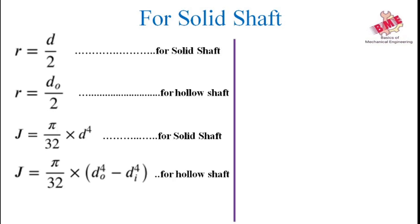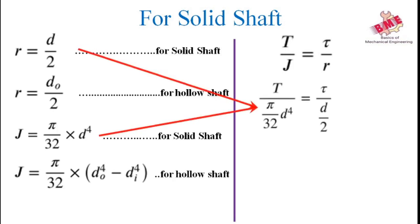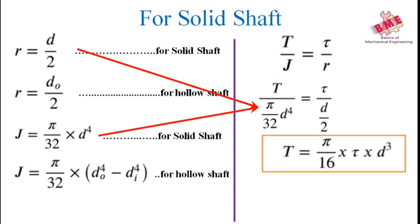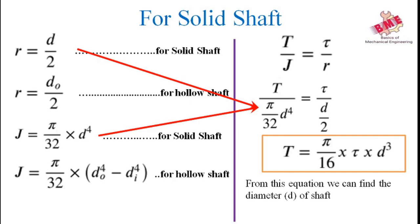We put equations 1 and 3 into the torsion equation and get T / (π/32 × D⁴) = τ / (D/2). After simplifying, we get the final equation T = π/16 × τ × D³. From this equation, we can find the diameter of the shaft. If in the problem we are given torque and torsional shear stress, we can find the diameter of the solid shaft.